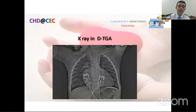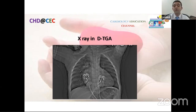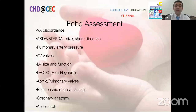For all congenital heart disease, we start with the chest X-ray. In dextro-transposition, the characteristically known 'egg on side' shape identifies the condition, with variable lung vascularity depending on the presence or absence of associated shunts.